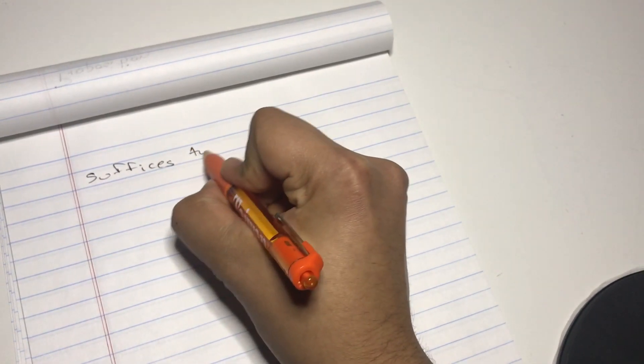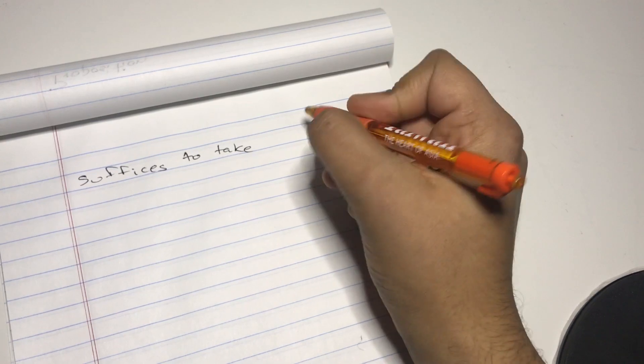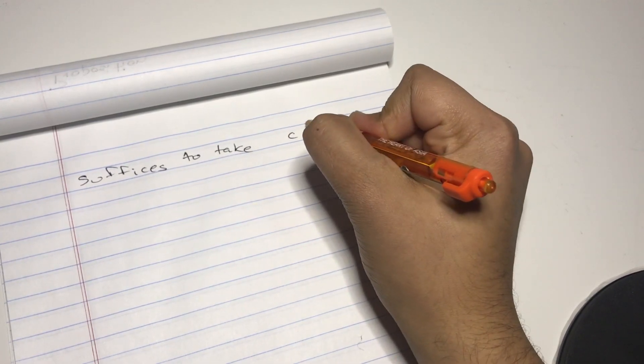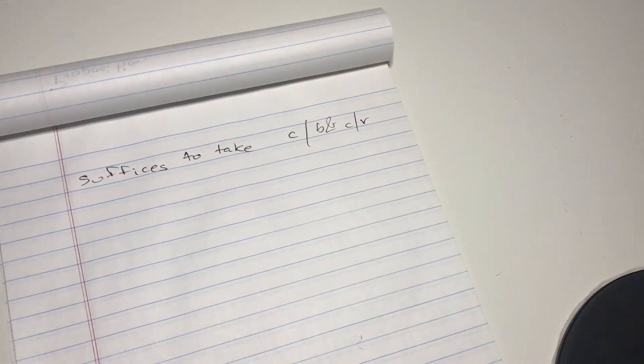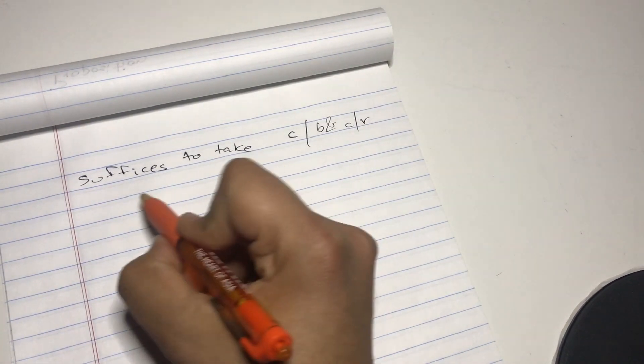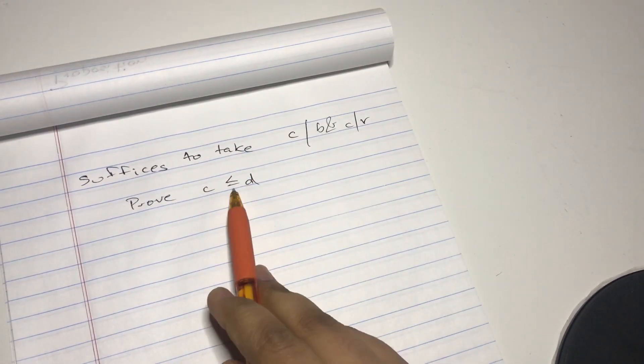I'm just gonna write it down. It suffices to take another common divisor of b and r, let's say c. So c divides b and c divides r, and we must prove c is less than or equal to d.